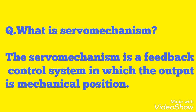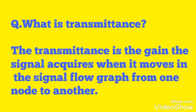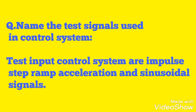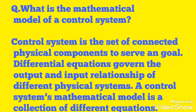A servo mechanism is a feedback control system in which the output is mechanical position. Transmittance is the gain that a signal acquires when it moves in the signal flow graph from one node to another. The test input signals used in control systems are impulse, step, ramp, acceleration, and sinusoidal signals. The mathematical model of a control system is a collection of differential equations that govern the output and input relationship of the physical system.